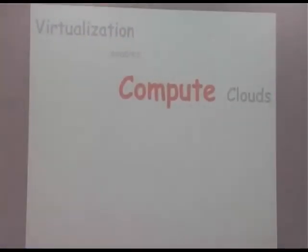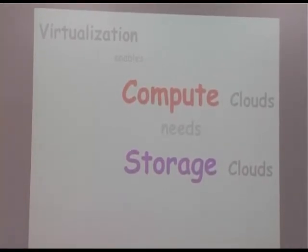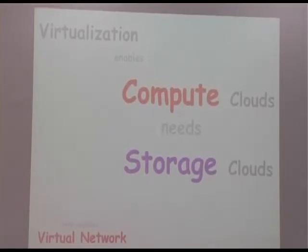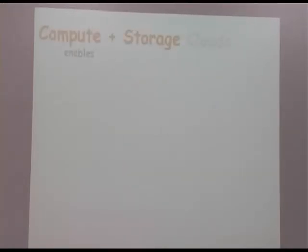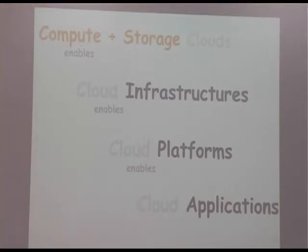Virtualization enables compute clouds, accumulating servers to give large computational power. That processing requires storage clouds. Both require virtual networks — one server can run multiple operating systems, and while it has one physical ethernet port, you assign multiple IPs to it, requiring a virtual network. Compute and storage clouds together enable cloud infrastructure. With cloud infrastructure, you build cloud platforms for specific technologies. With cloud platforms, you build and deploy cloud applications. These three — IaaS, PaaS, and SaaS — are the three pillars of cloud computing.